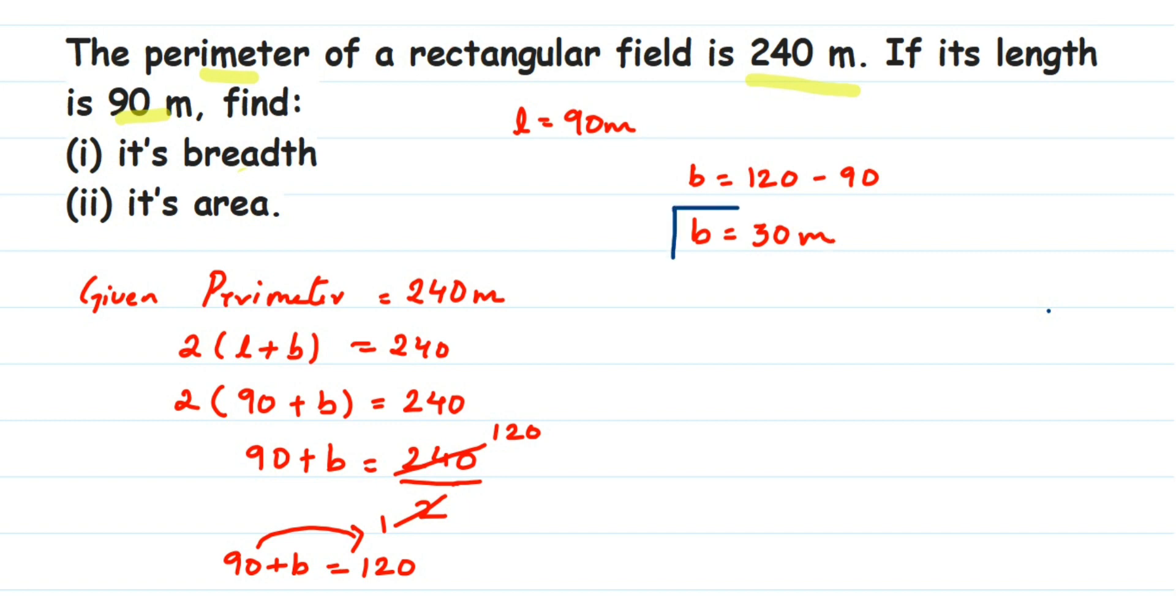We have got the first answer - the breadth is 30 meters. Now we're going to find out its area. That was the first question, now the second one is to find the area of the rectangle.